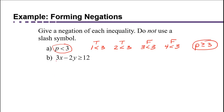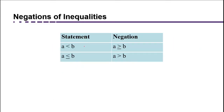Similarly, for part B, the negation of 'greater than or equal to' is only false when we have a number strictly less than. So the negation of '3x − 2y ≥ 12' is '3x − 2y < 12' — we don't include 'or equal to' because that was already in the original. To summarize: 'A < B' negates to 'A ≥ B'; 'A ≤ B' negates to 'A > B,' and vice versa.